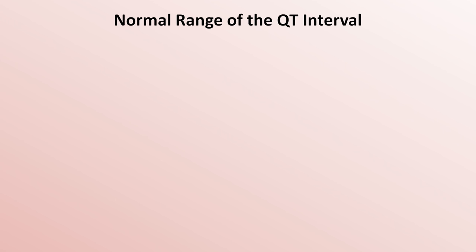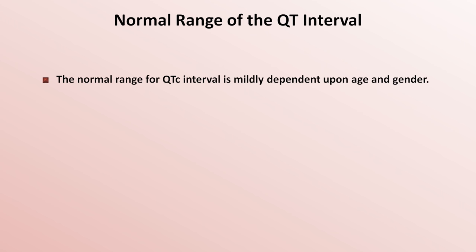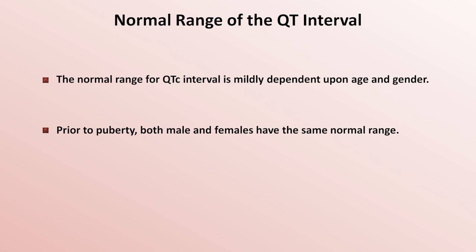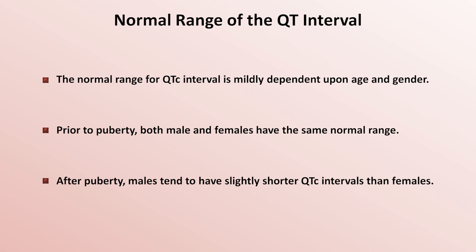So now, what is the normal range for the QTc? It's mildly dependent upon age and gender. Prior to puberty, both males and females have the same normal range. While after puberty, males tend to have slightly shorter QTc intervals than females, which is attributed to differences in the ratio of sex hormones. There is not a complete consensus on the normal range of the QTc.